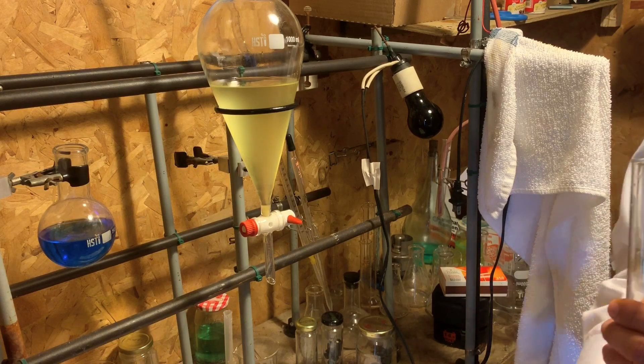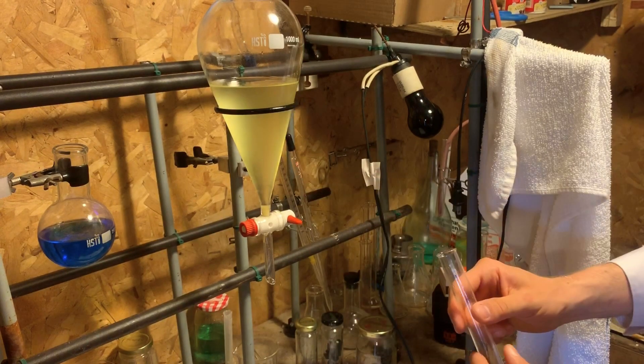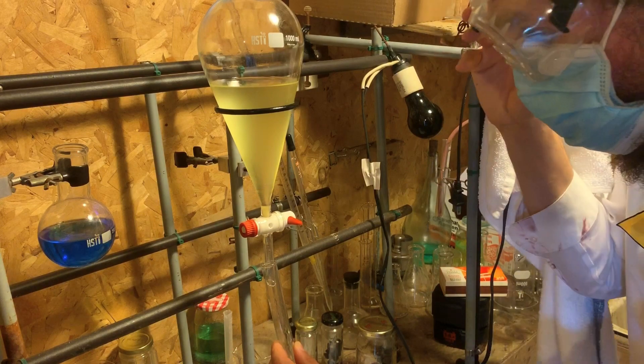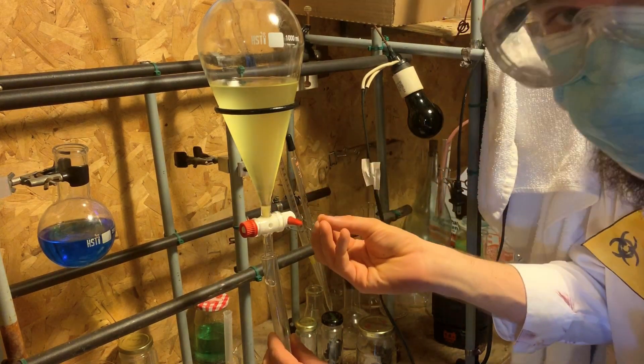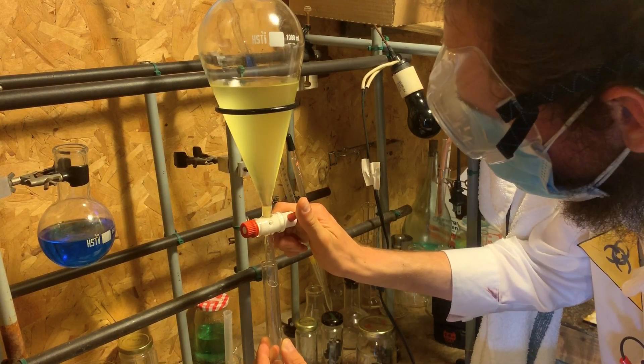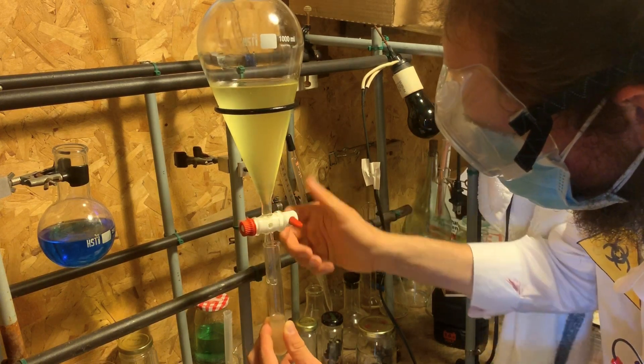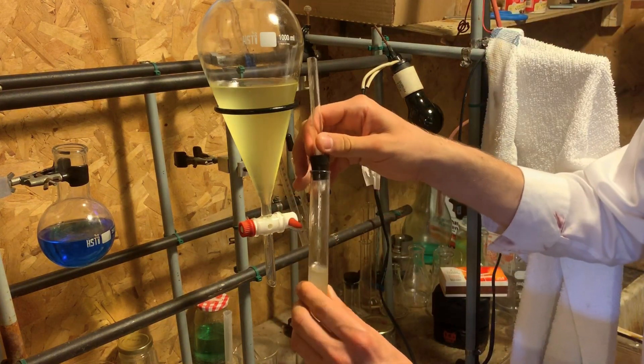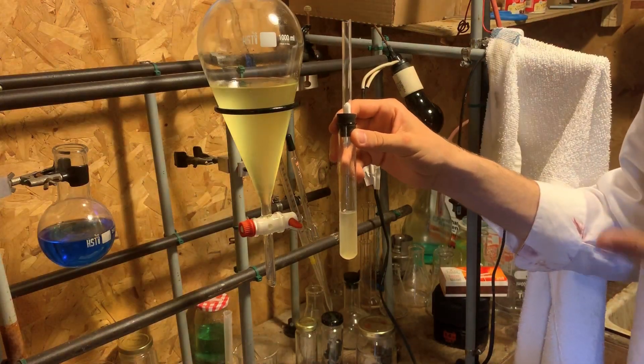Now from here I'm going to collect our bromoform and put it in this test tube. Keep in mind bromoform is very dense so it has sunk to the bottom. I'm going to collect it. Okay, that's it. I'm now going to cap it off with a rubber stopper and place it on this clamp over here.